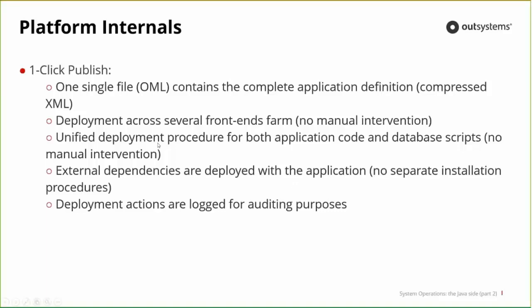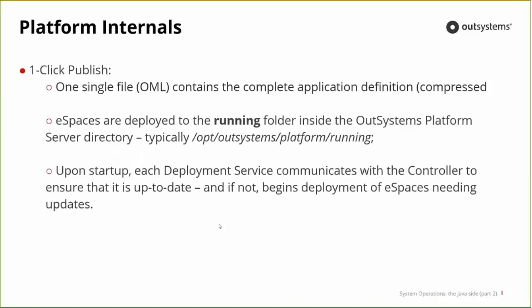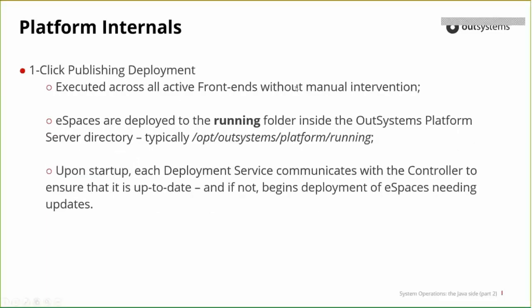Recapping: OML is a single file containing the application definition — a compressed XML. Deployment is done across all frontends in the farm without any manual intervention; whether you have one or twenty, it's exactly the same procedure — you click one button and the platform takes care of the rest. It's a unified deployment handling both application code and database scripts. All external dependencies are placed inside the application directly. Deployment actions are all logged in the general log inside Service Center for auditing purposes. This is executed across all active frontends — the 'active' word is important: if you disable a frontend in Service Center, it will not receive the new version you just published.